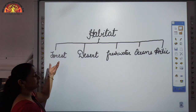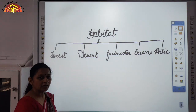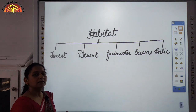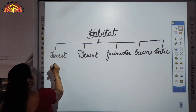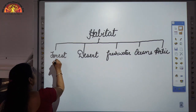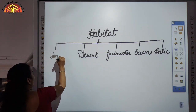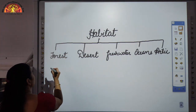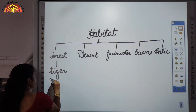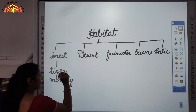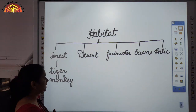Animals that live in the forest habitat: a large variety of animals live in the forest. Many animals live in caves, like lion. Monkeys live on trees and on land. Giraffe and zebra also live in forests. The examples of animals which live in the forest are tiger, monkeys, rabbits — they live in the burrows — and lions, they live in the caves.